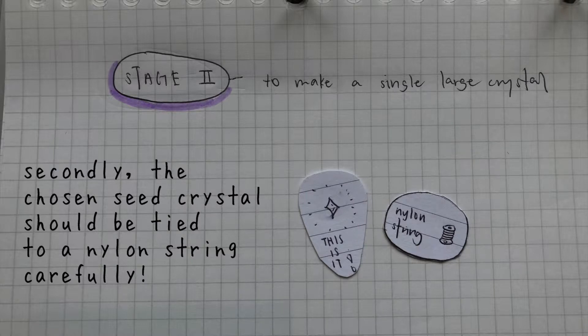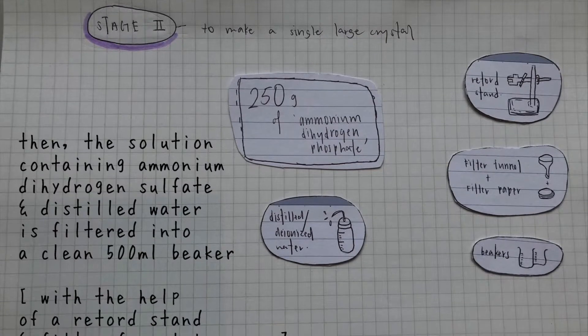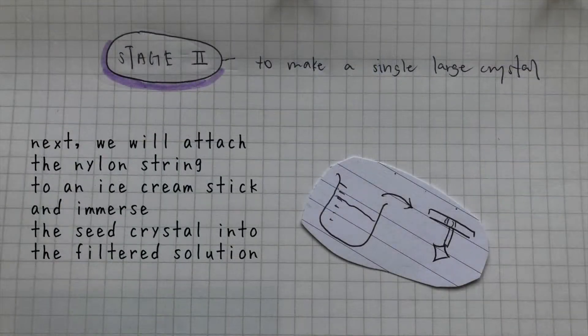The remaining ammonium dihydrogen phosphate solution was then filtered into a clean, new 500 milliliter beaker. We then attached the nylon string to an ice cream stick and immersed the seed crystal into the filtered solution.